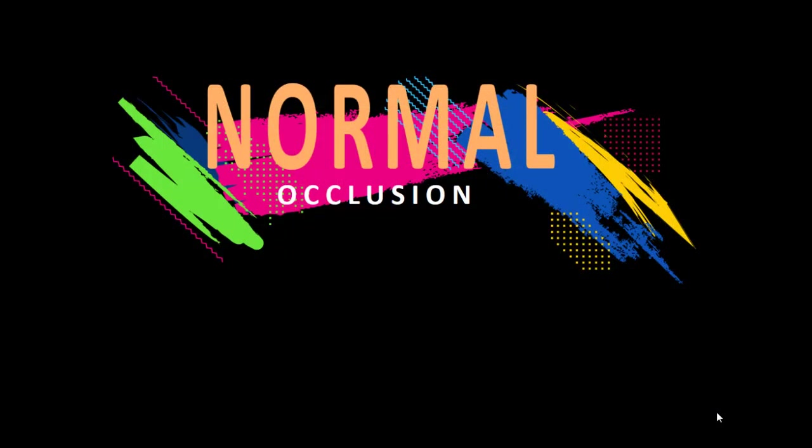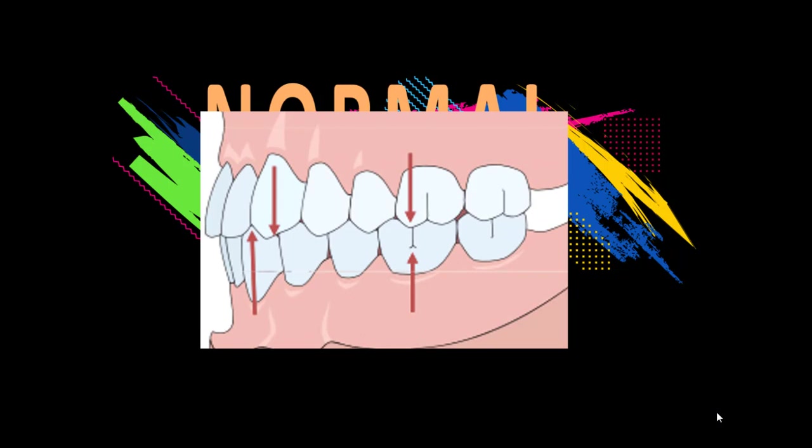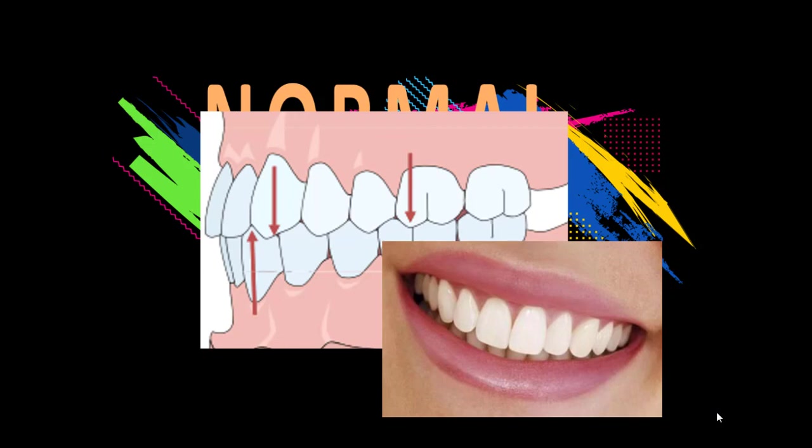Before we can identify malocclusions, it's important to recognize what is considered a perfectly normal occlusion. If you look at this image, you can see that the mesial buccal cusp of the maxillary first molar is occluding directly to the buccal cusp of the mandibular first molar. The maxillary canine is occluding between the distal half of the mandibular canine and the mesial half of the mandibular first premolar. If a patient has no other malalignments on the anterior teeth — everything is perfectly straight, no overjet, overbite, no rotations — this is considered normal.